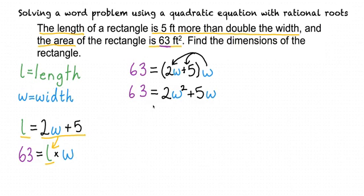This equation here is almost a quadratic equation. We do have our squared variable and the variable raised to the first power. If we want to make it look like a regular quadratic equation, then we just need to set it equal to zero. We can do this by subtracting 63 from both sides.